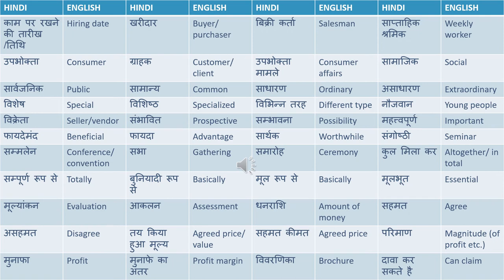Sambhavna means possibility. Prospective means sambhavit — as in sambhavit kharidaar, a prospective buyer. Sambhavna hai ki woh hamaare utpad ko khariday — there is a possibility that they will buy our products. Mahatvapurna means important. Faydamand means beneficial. Fayda means advantage. Sartak means worthwhile.